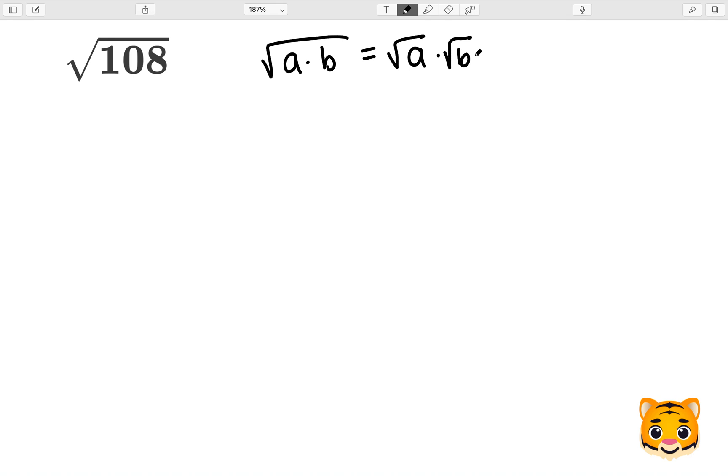Now we can apply this to the square root of 108 by first looking at factors of 108. While there are many factors of 108, I will choose to use 3 and 36. The reason I chose 3 and 36 is because 36 is a perfect square. This will help us in the future to simplify.